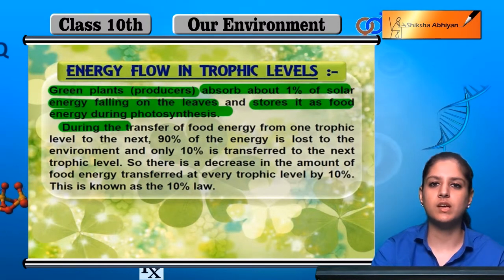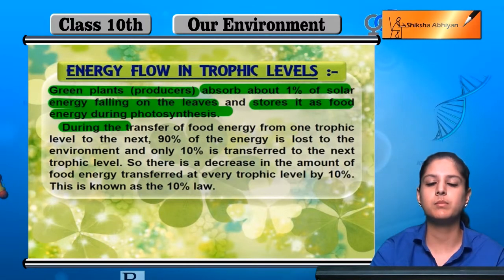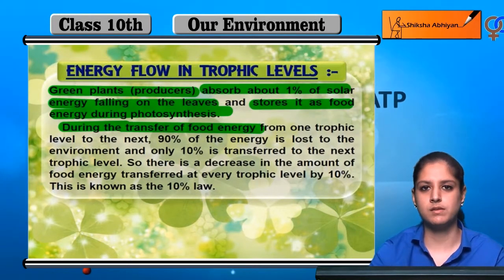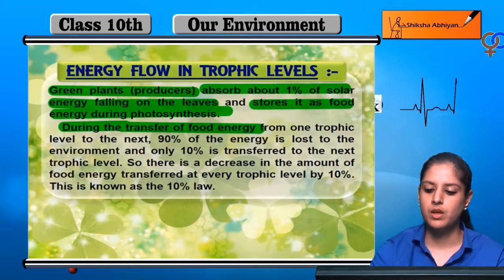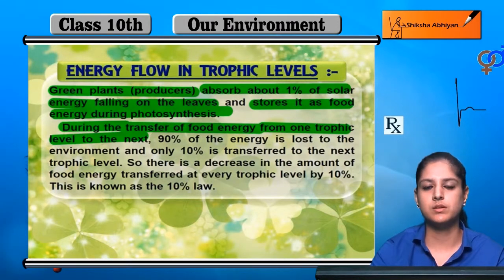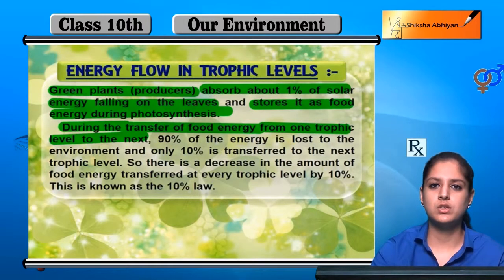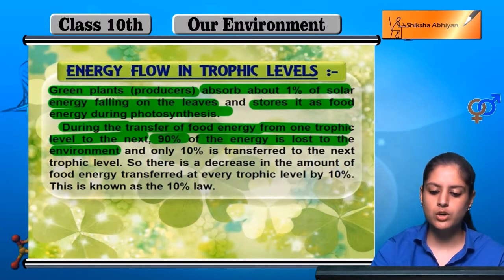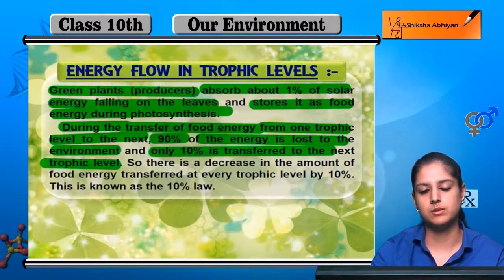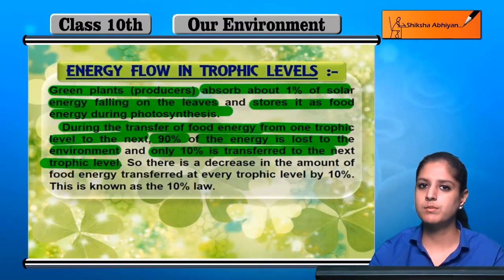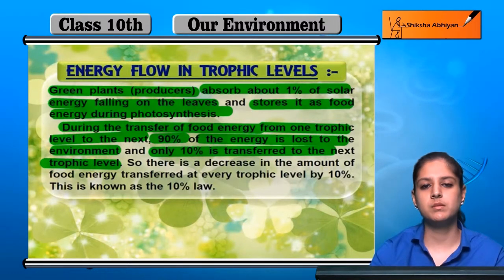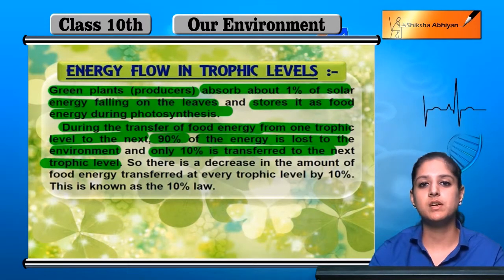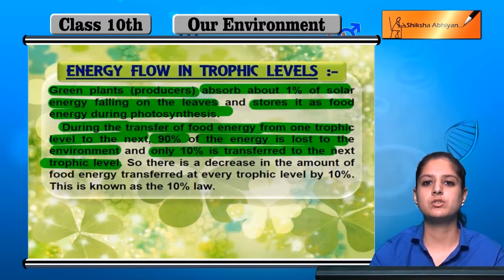When energy is transferred to the next level and the primary consumer comes, what happens to food energy? From one trophic level to the next, the transfer goes as follows: 90% of the energy goes into the environment and only 10% goes into the next trophic level. So from the plants, 100% is absorbed, and when a primary consumer feeds on plants, 90% goes into the environment and 10% goes into the primary consumer.